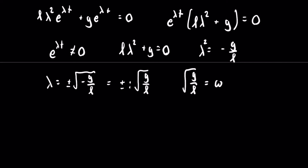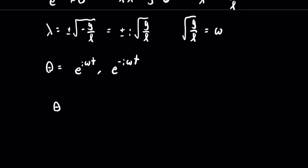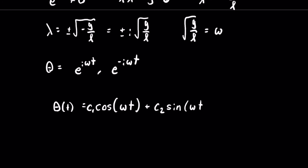We assumed that theta of t equals e to the lambda t, and we found that lambda equals plus or minus i omega. This means our two solutions for theta of t are e to the i omega t and e to the negative i omega t. From here, solving this is exactly the same as in the mass-spring system, so the general answer is theta of t equals c1 cosine of omega t plus c2 sine of omega t. C1 and c2 are arbitrary constants which can be solved for if the problem gives initial conditions. Remember that in this case omega equals the square root of g over l.